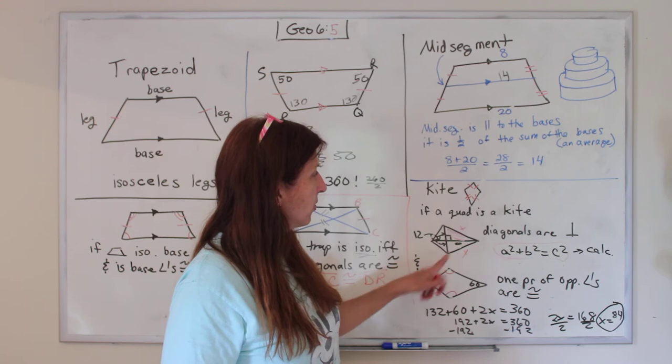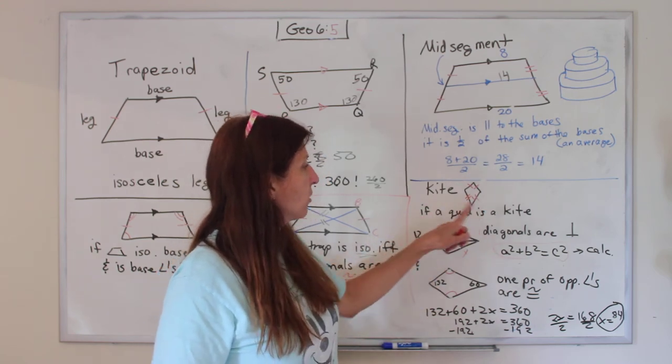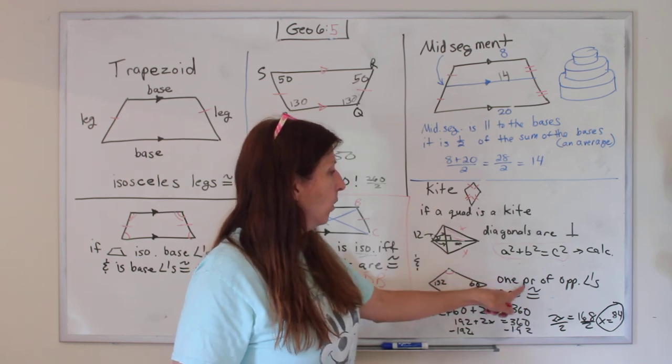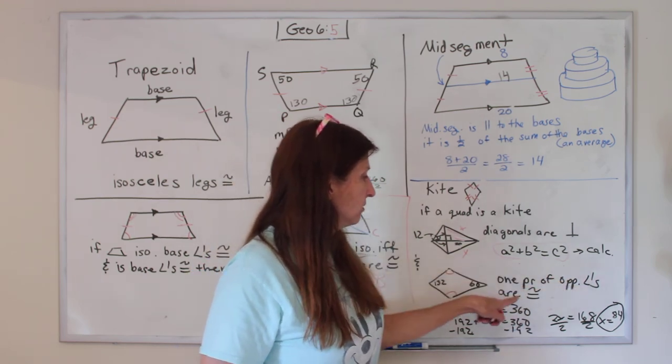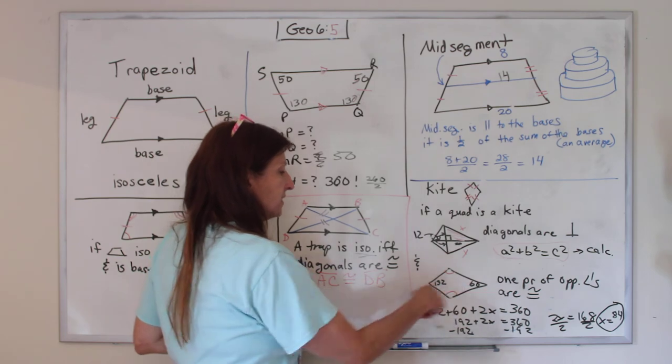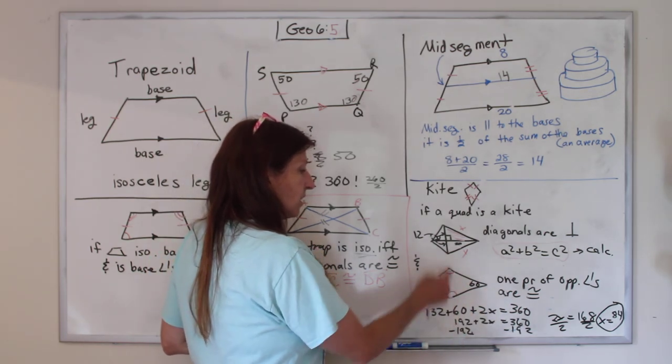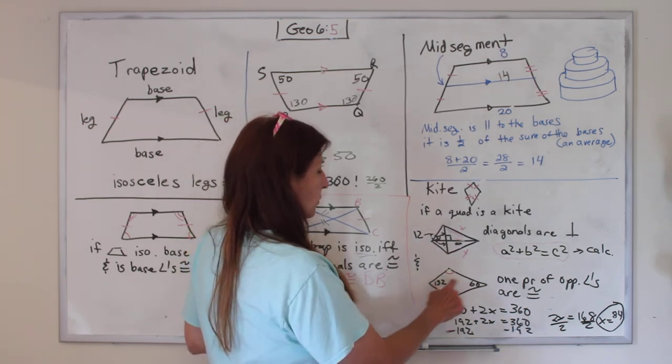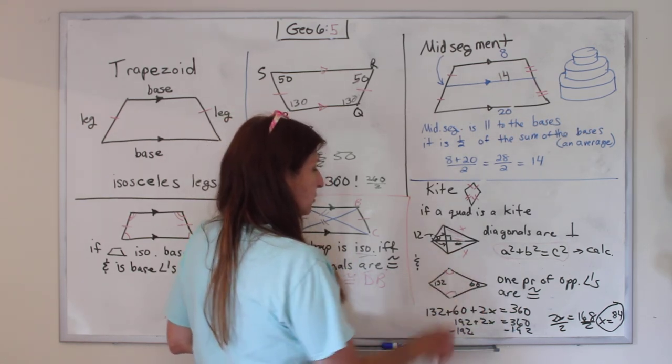All right, so here's another theorem about kites. A quadrilateral is a kite if one pair of opposite angles are congruent. So here's a kite. And these two across from each other will be the same. So like this angle is 132, that one is 160, but these two are the same.